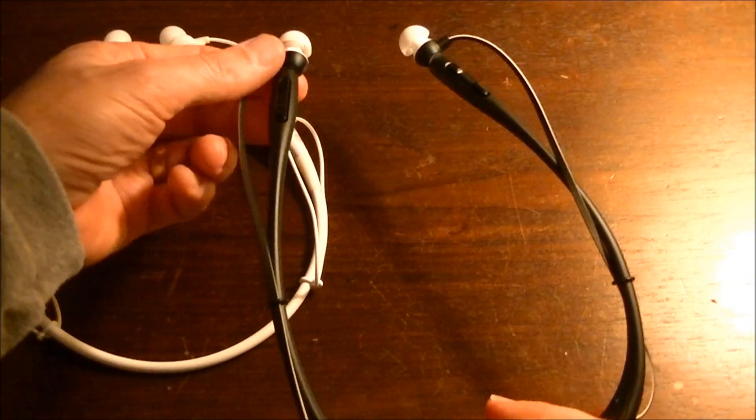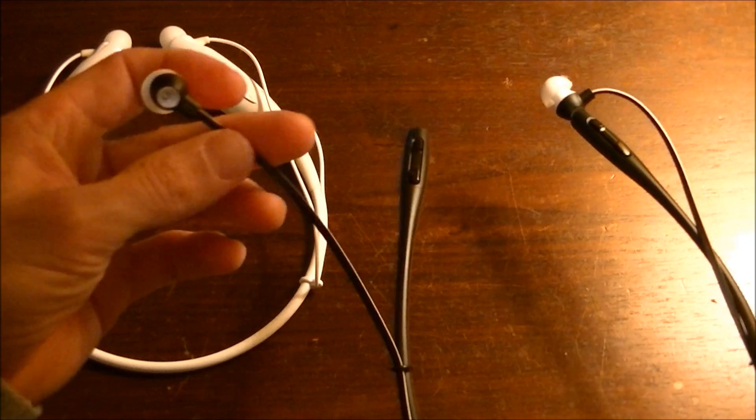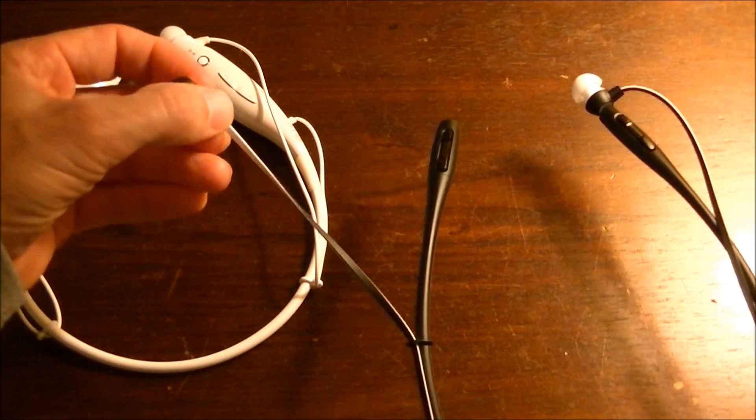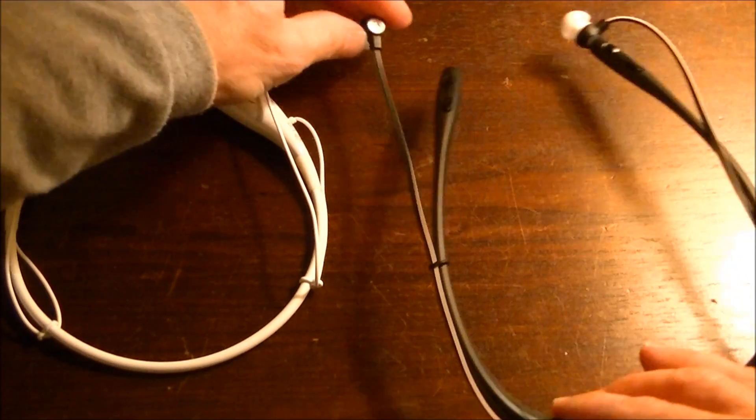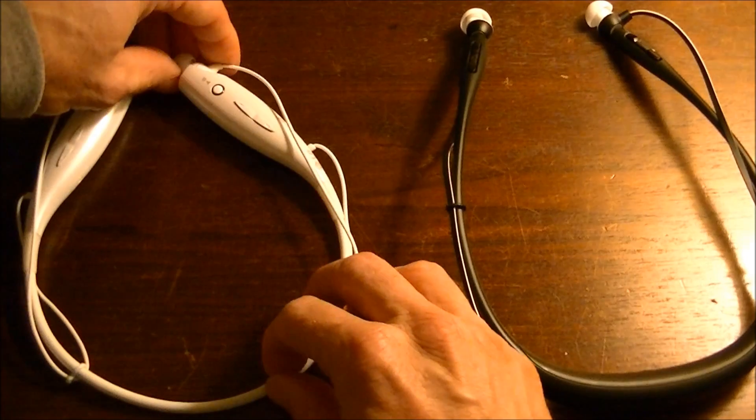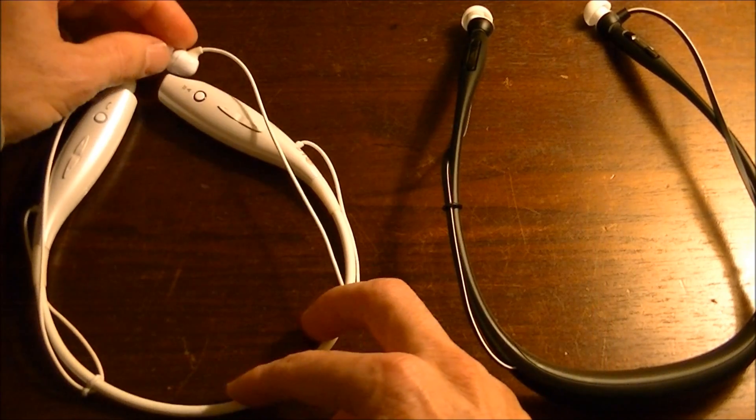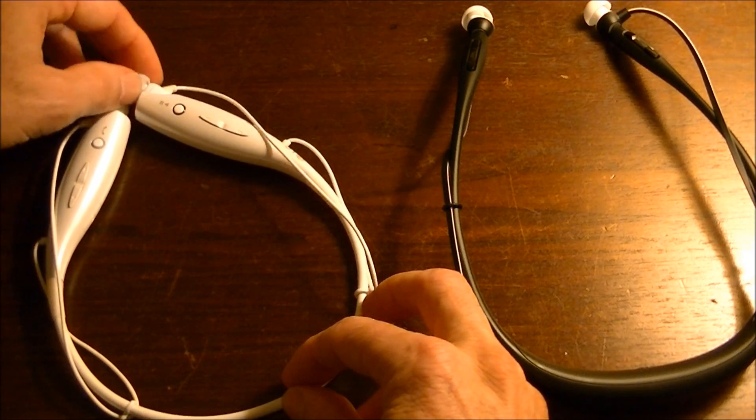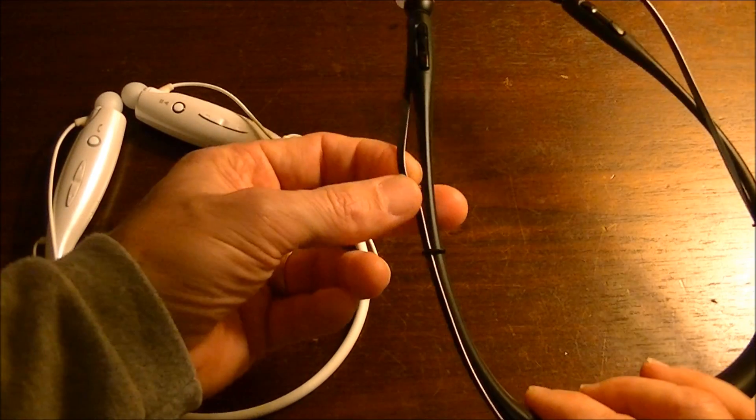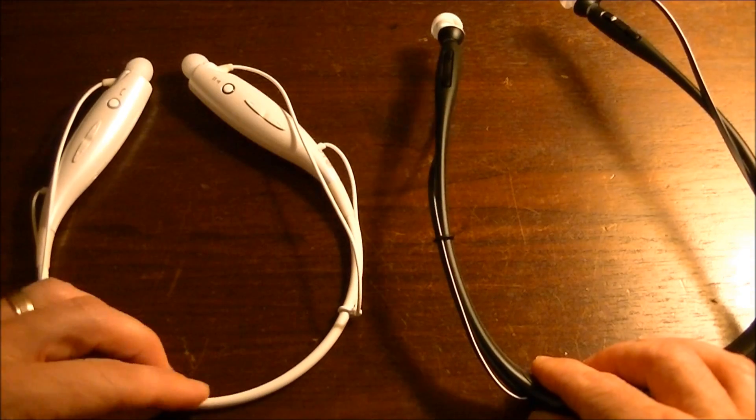A couple other features that are different. The Motorola's have a flat cord. You may be able to see that in the video. Whereas the LG's is kind of the standard size round cord. Because it's such a short cord, you really can't get them tangled. But I do like the flatter cord. It just feels a little bit more durable.